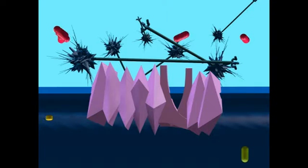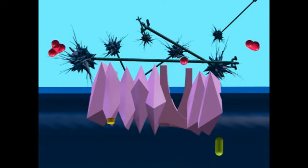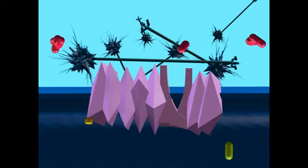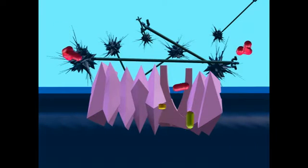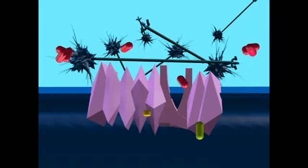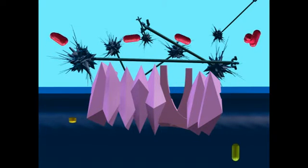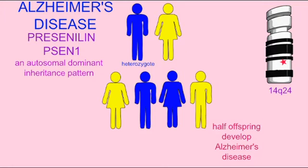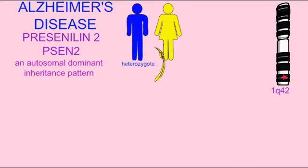If the amyloid precursor protein is cleaved abnormally, then abnormal byproducts can result which are not degraded completely, which then accumulate forming plaques and which are neurotoxic. Mutations in presenilin 1, in presenilin 2, and in the amyloid precursor protein can all result in abnormally sized fragments.